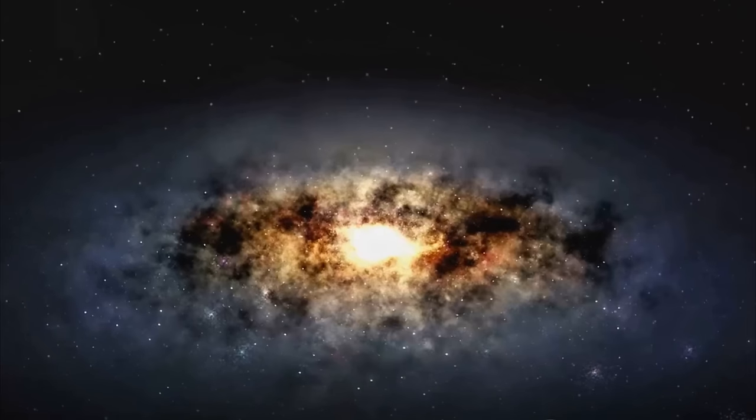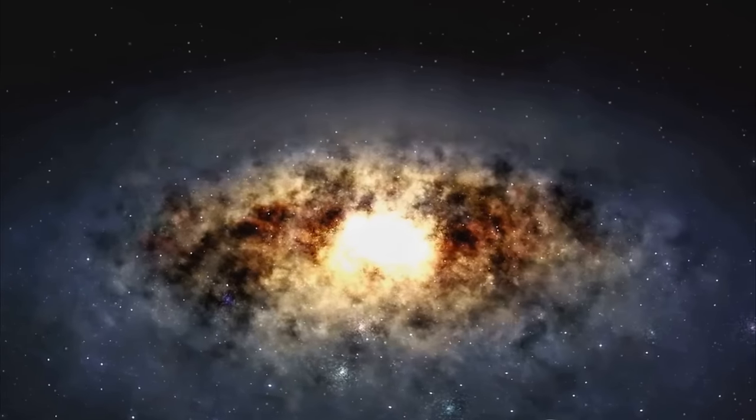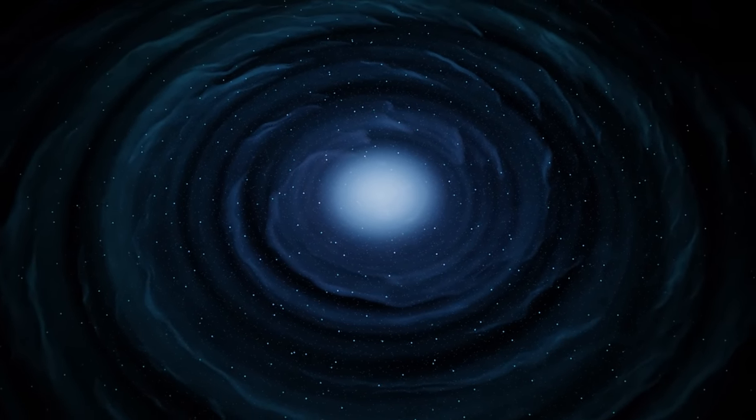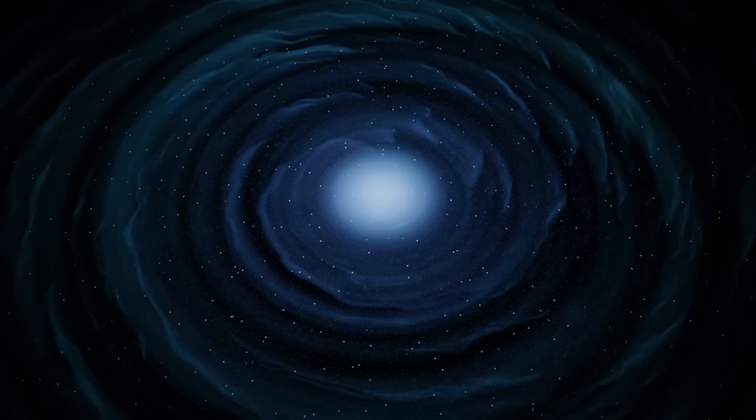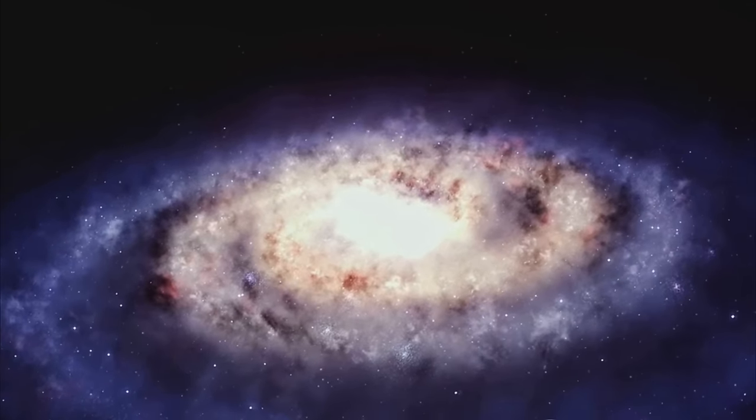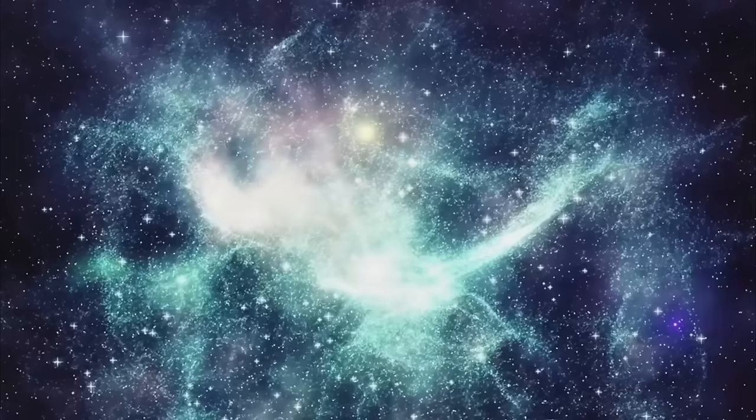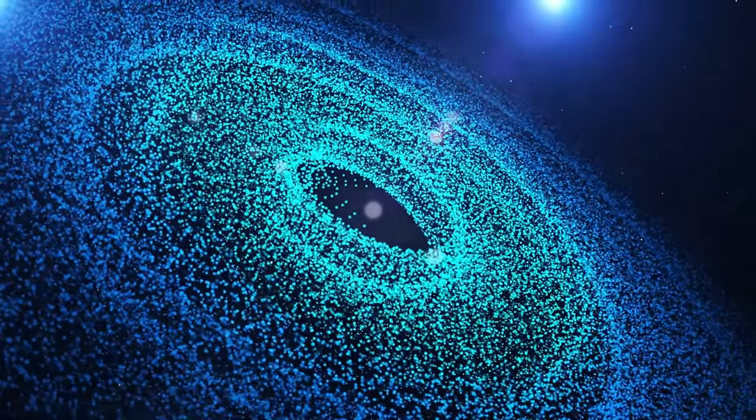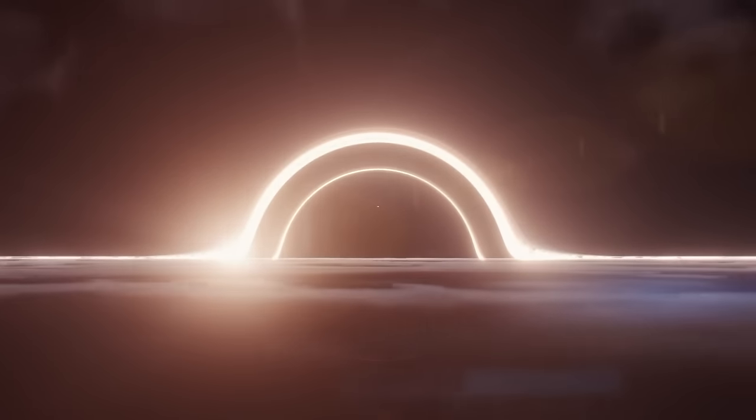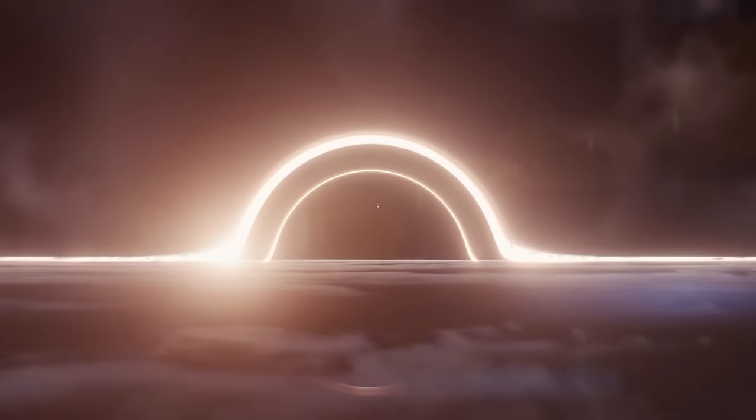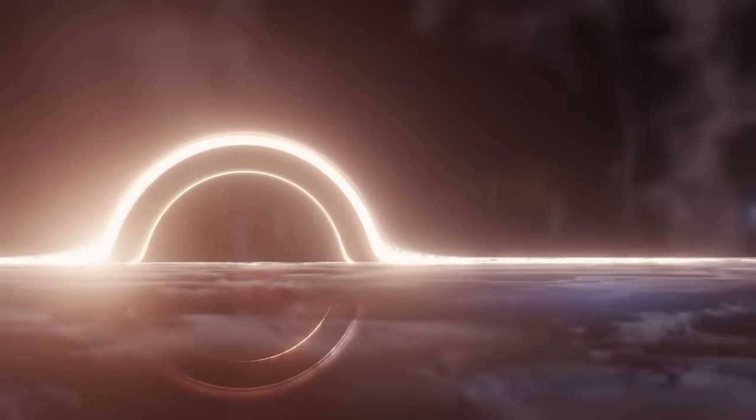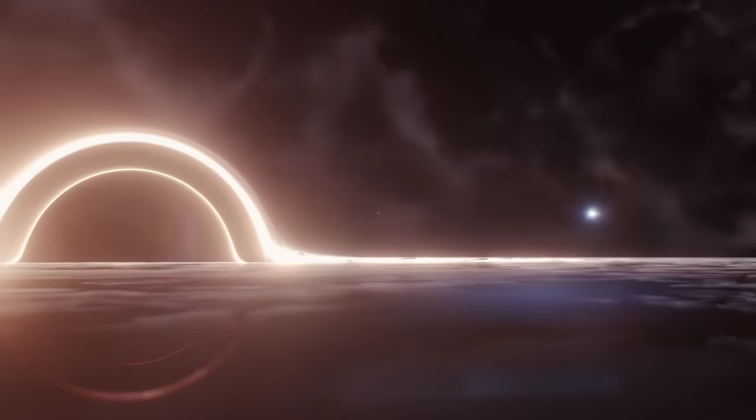So what makes the Milky Way so special? Well, let's start with its unique spiral structure. Imagine a cosmic whirlpool spinning in the vast ocean of space. That's our Milky Way. It's a barred spiral galaxy with a distinctive bar-shaped core region surrounded by a flat, rotating disk of stars and gas. This disk is home to four major spiral arms where new stars are born and old ones meet their end. Now let's delve a little deeper into the heart of our galaxy, the galactic center. Nestled within this bustling hub is a supermassive black hole, Sagittarius A*. Don't let its ominous name scare you, though. This cosmic behemoth, weighing in at four million times the mass of our sun, doesn't pose any direct threat to us. But its gravitational pull does orchestrate the cosmic dance of the stars and gas clouds around it.